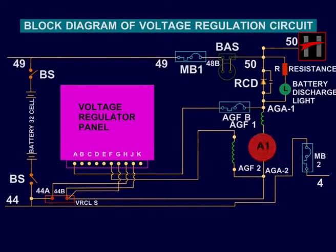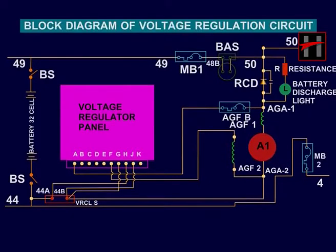The average current in the generator field is determined by the ratio of on time to off time. On time is fixed by the circuitry of the regulator, but off time is determined by the pulse rate from the regulator card. As the generator voltage increases, the pulse rate decreases; as the generator voltage decreases, the pulse rate increases.